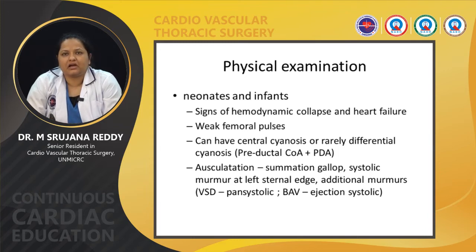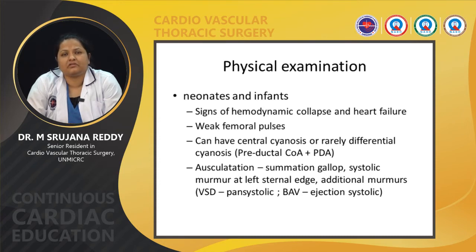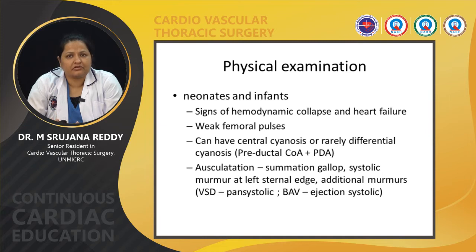On auscultation, a summation gallop is heard. A systolic murmur can be heard at the left sternal parasternal margin. If there is an associated VSD, there is a pansystolic murmur. When there is a bicuspid aortic valve, there can be an ejection systolic murmur or other additional sounds.